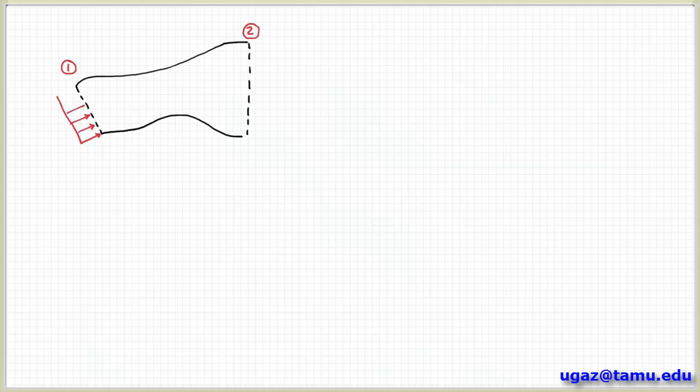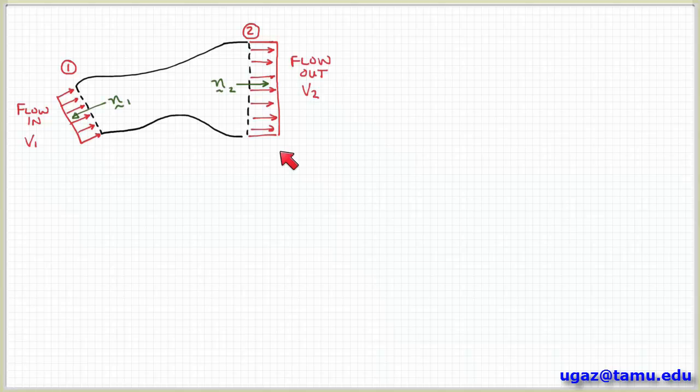And let me just redraw the geometry here on the next slide so I can continue. We have the flow coming in at some velocity V1 and uniform flow out at some velocity V2. So we can look at the remaining term, the flow term.